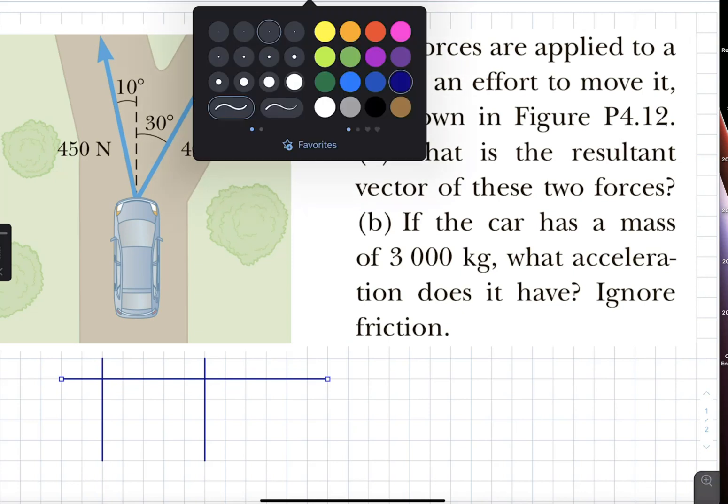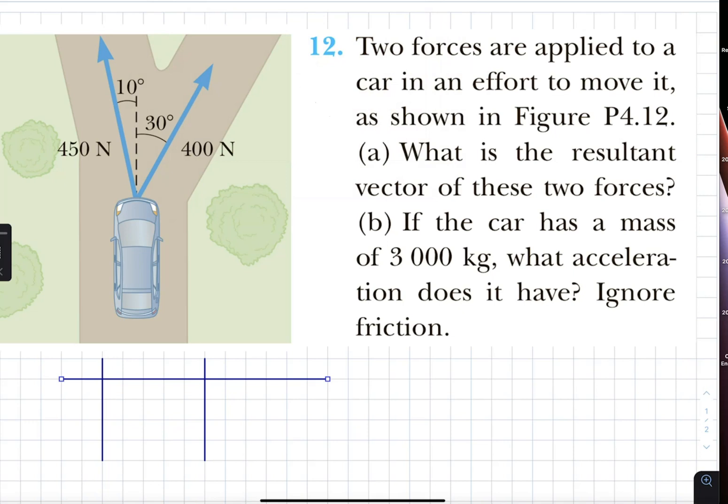450, and then 400, and we're going to look at their x and y components. Now, 450, if I look at my x and y, this side is across, so that's sin, this side is close, so that's cosine. For x component, 450 sine 10.